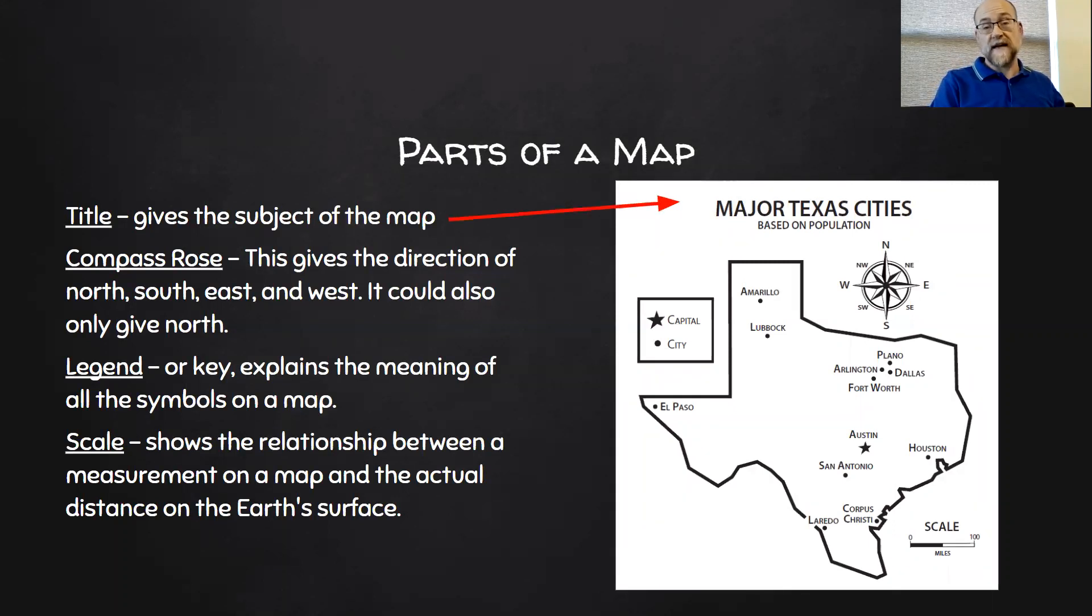The first one is the title. That's really important because it tells you what it's about. The next one is the compass rose, which gives you the directions north, south, east, west, sometimes only north. Of course, a legend will tell you what all the little symbols mean, squiggles, dots, stars, lines, and all of that.